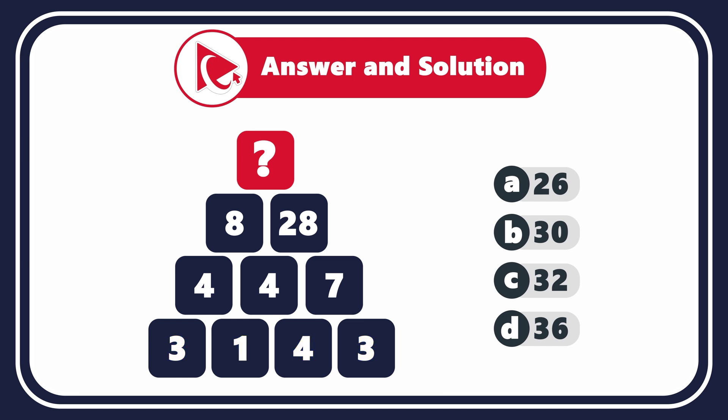You need to calculate the missing number and select it out of 4 possible choices. Choice A, 26. Choice B, 30. Choice C, 32. And last but not least, choice D, 36.